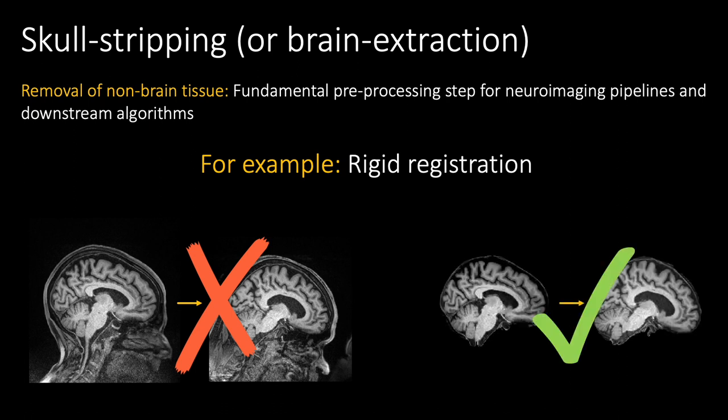Other methods that benefit from extracted brain matter include bias correction, cortical surface placement, and scan de-identification. Skull-stripping methods have been well explored, but many implementations come with particular downsides.